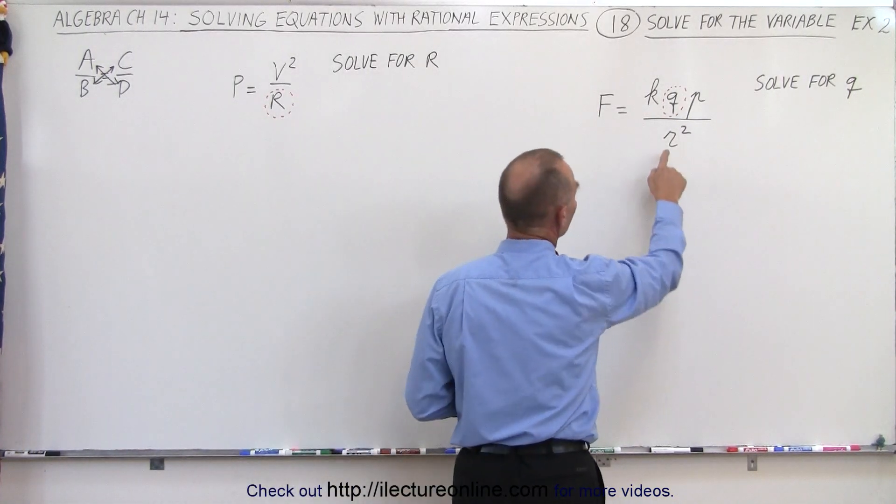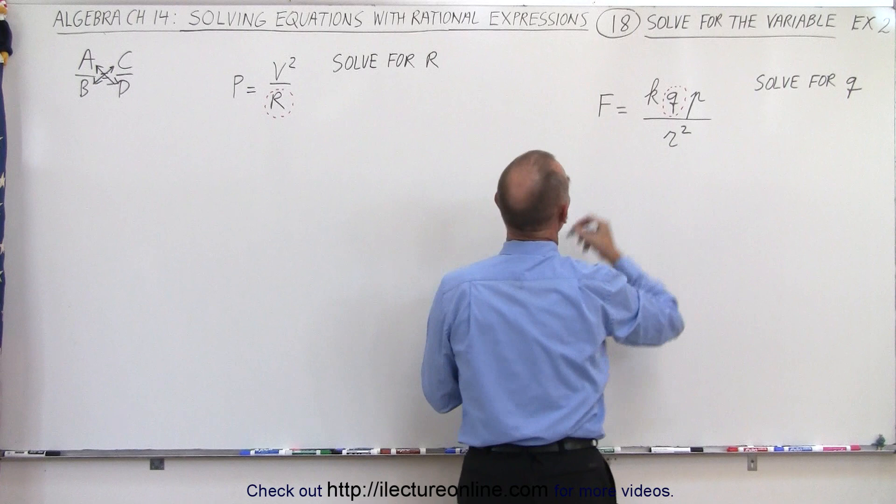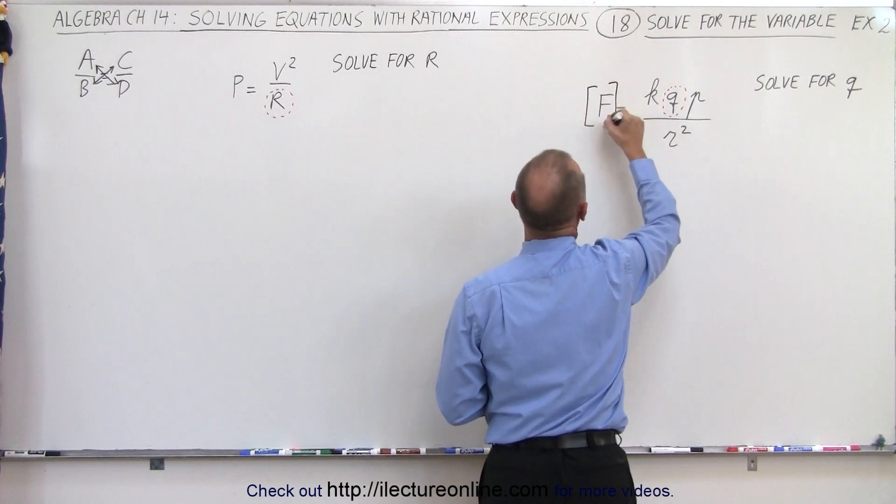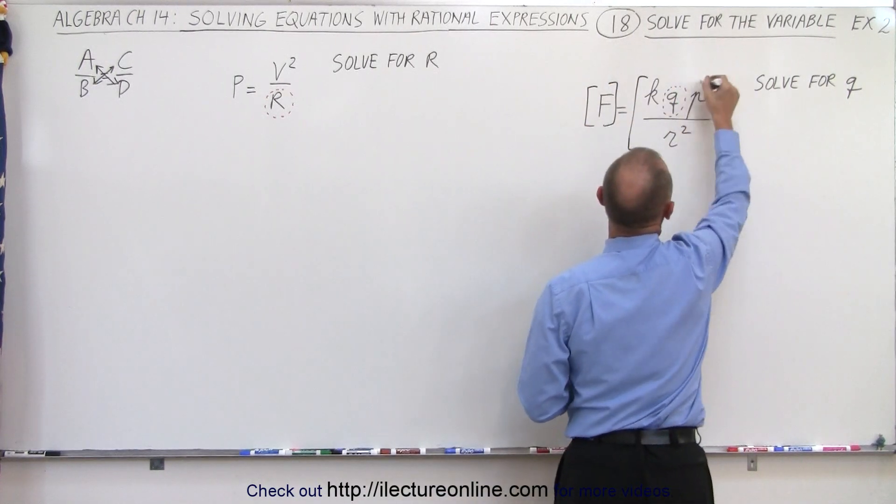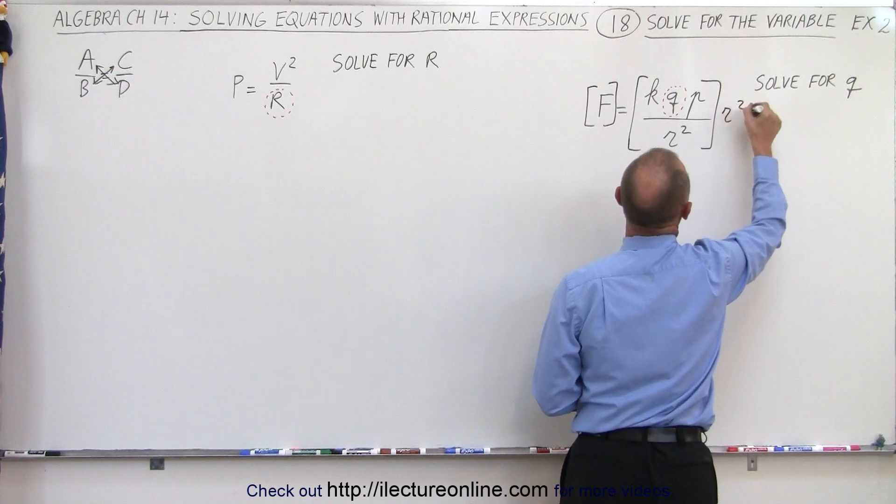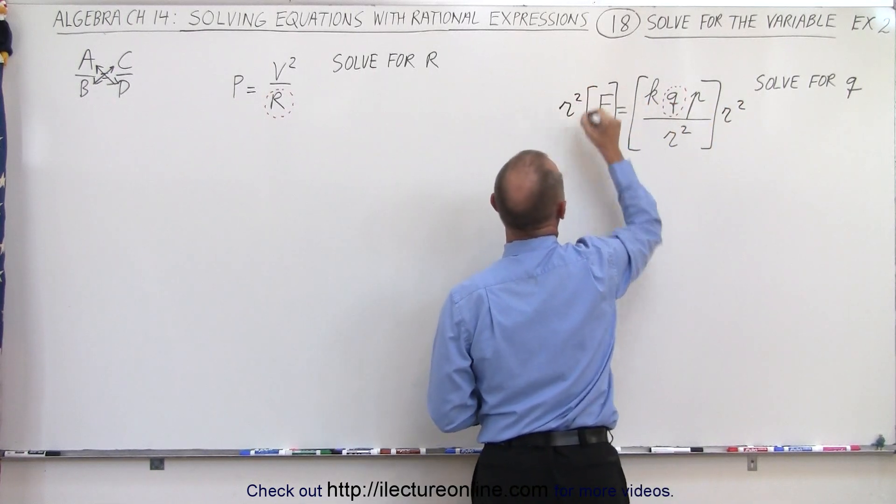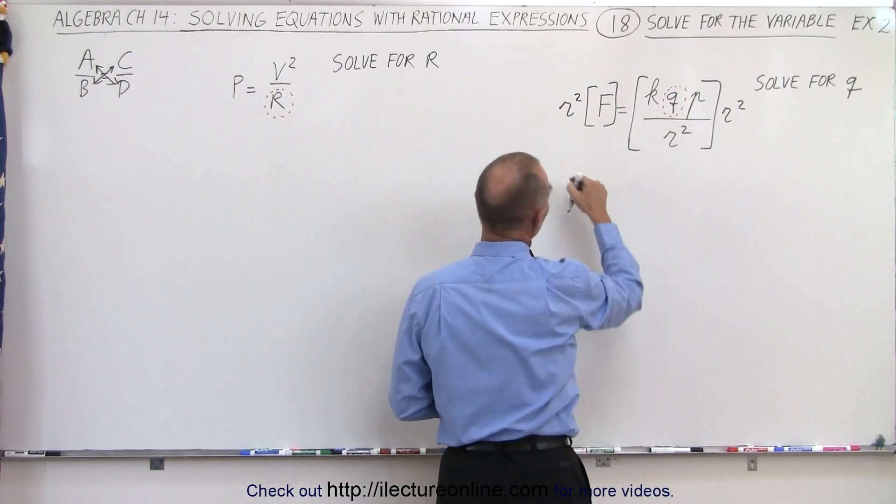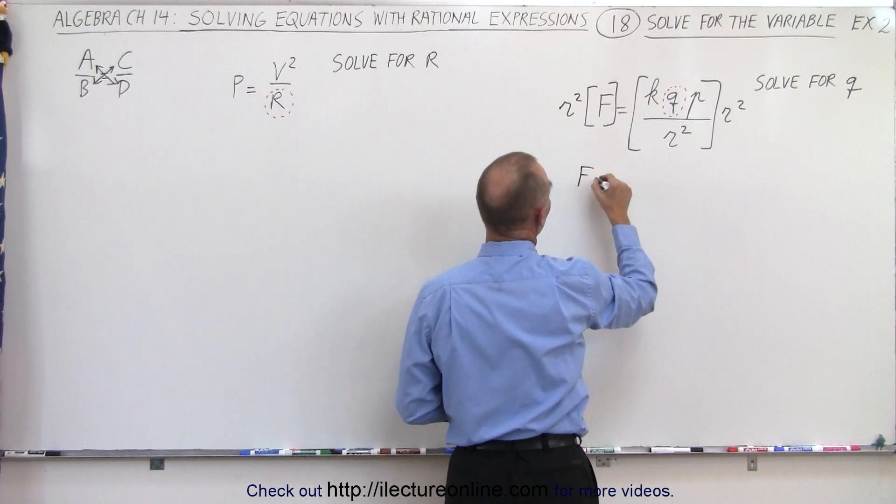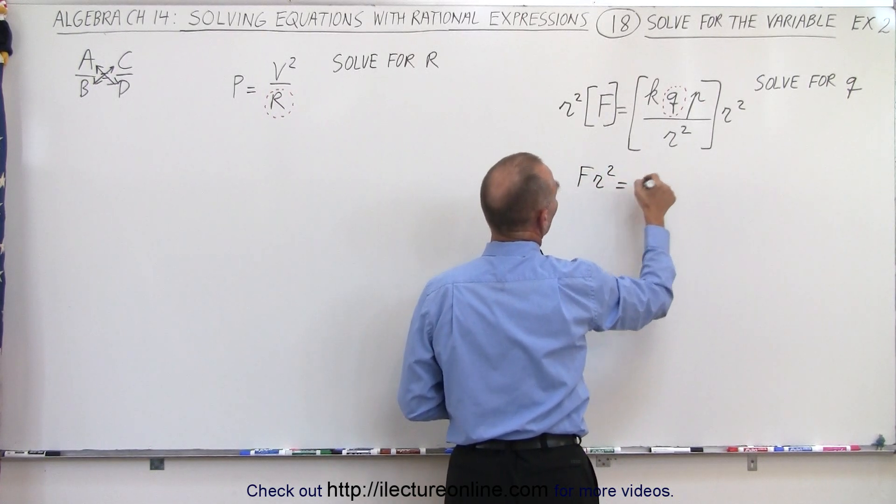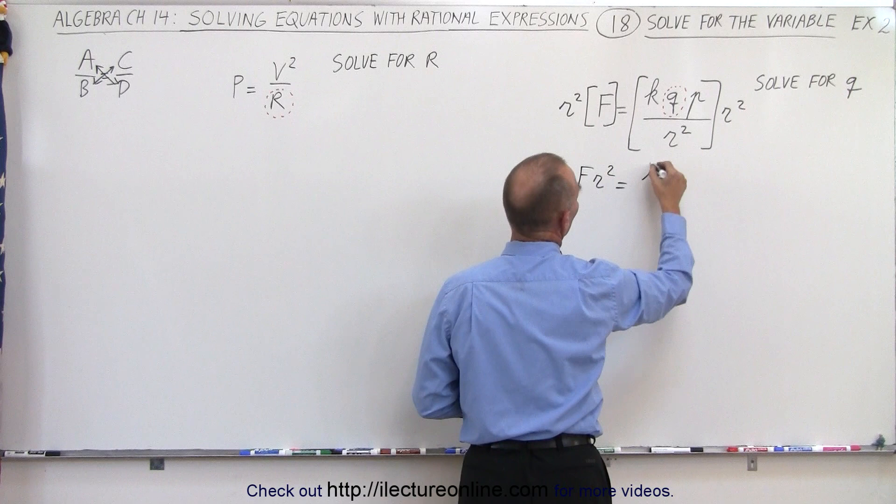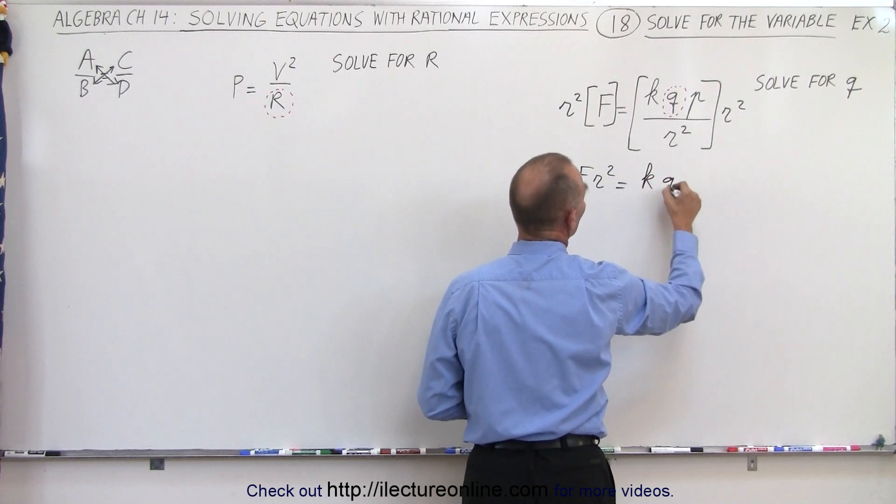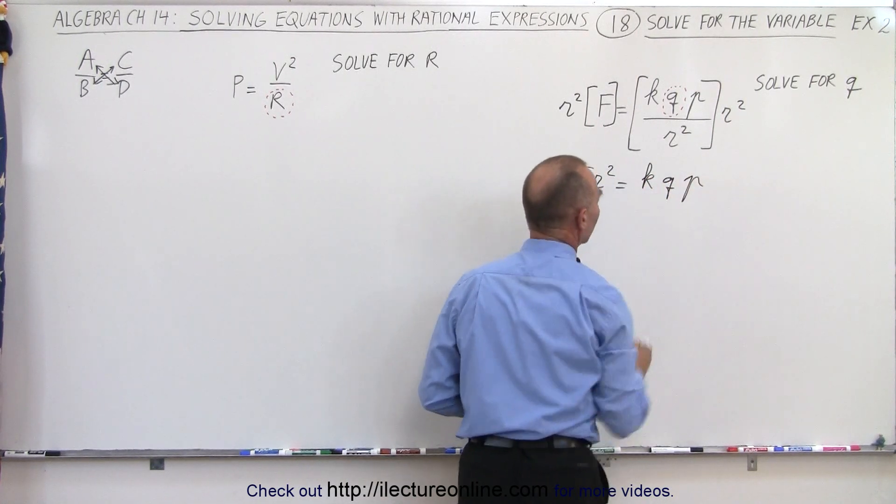let's go ahead and recognize that the lowest common denominator here is r squared. So we're going to multiply both the left and the right side of the equation by the lowest common denominator. If we do that on the left side, we get f times r squared. On the right side, the r squares cancel out and we're left with kqp. Remember, we're looking for q,